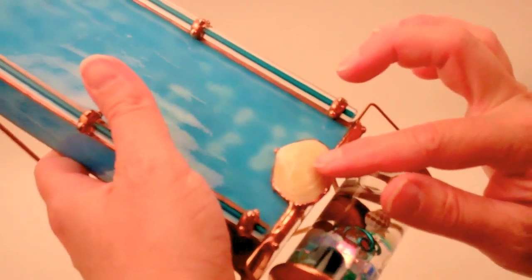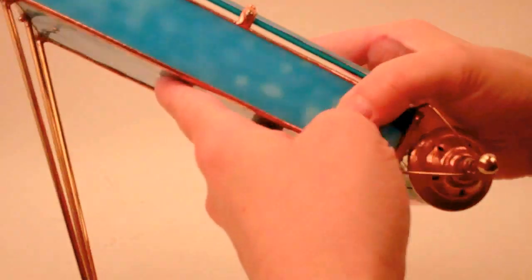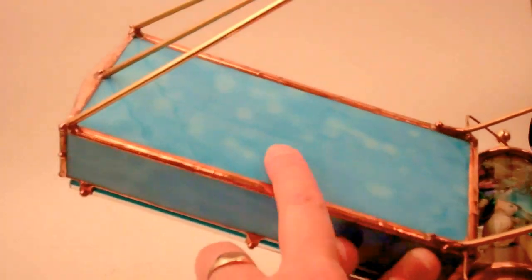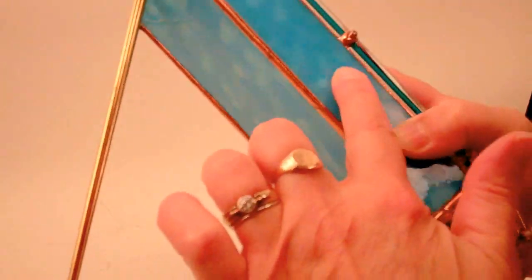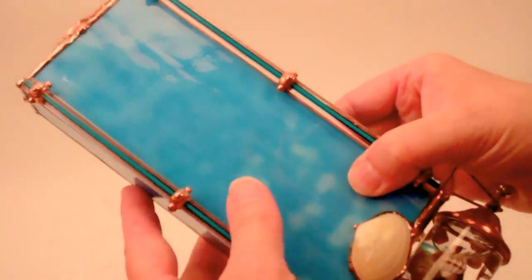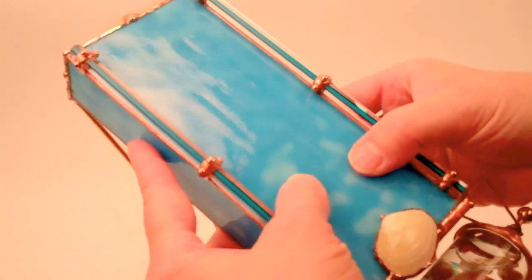Sue decorates it with an additional scallop shell on the exterior, and the stained glass is this beautiful blue cat's paw glass that looks like the shimmering water in a blue lagoon.